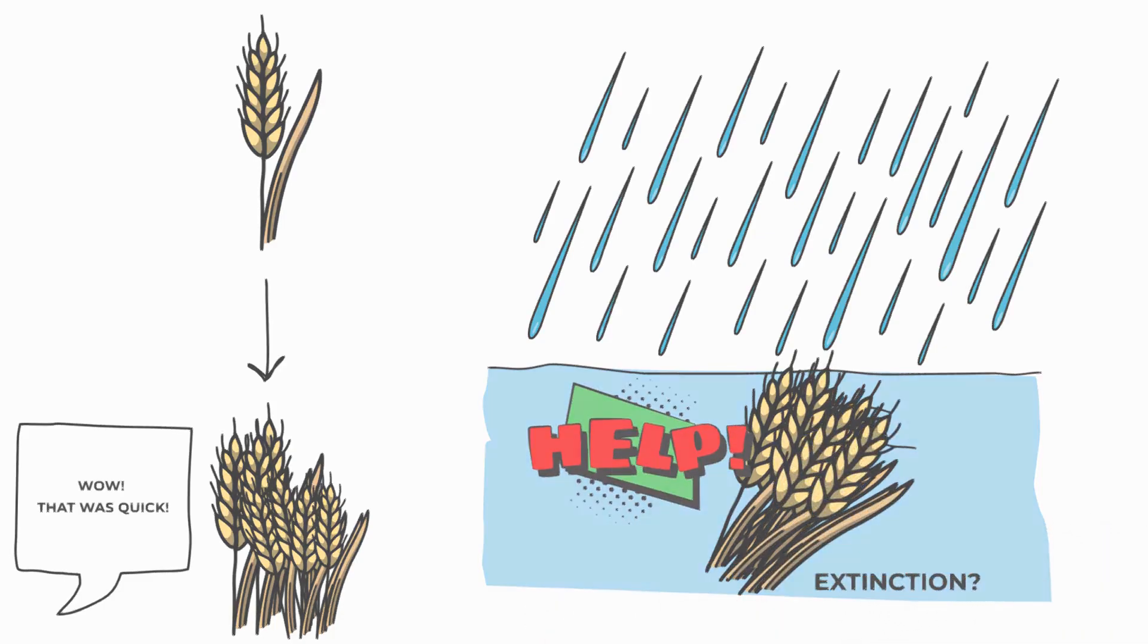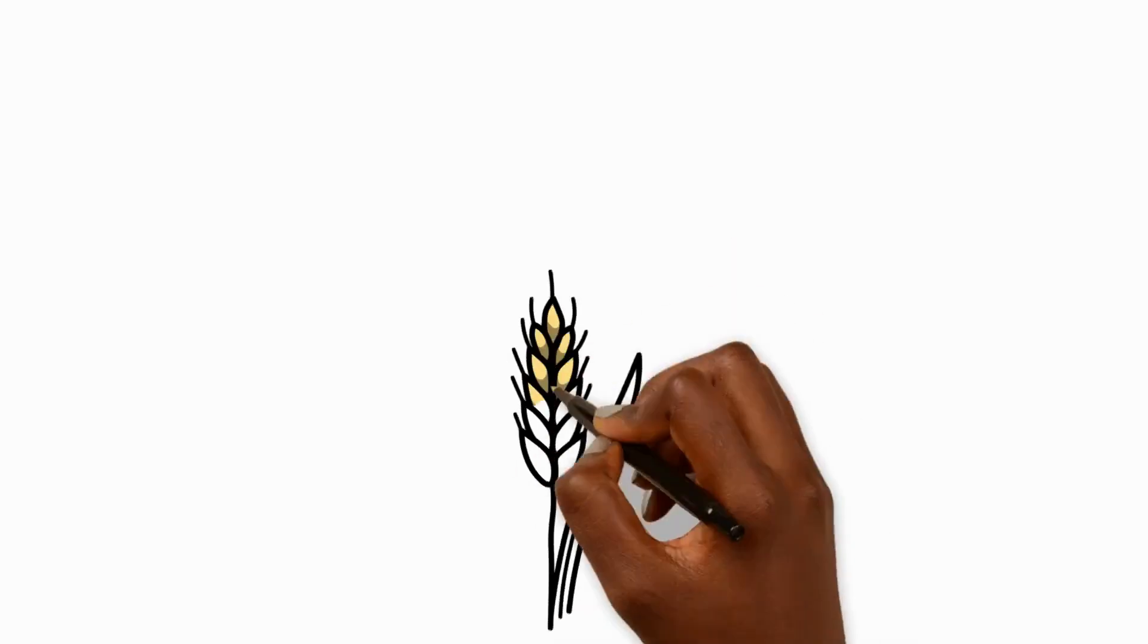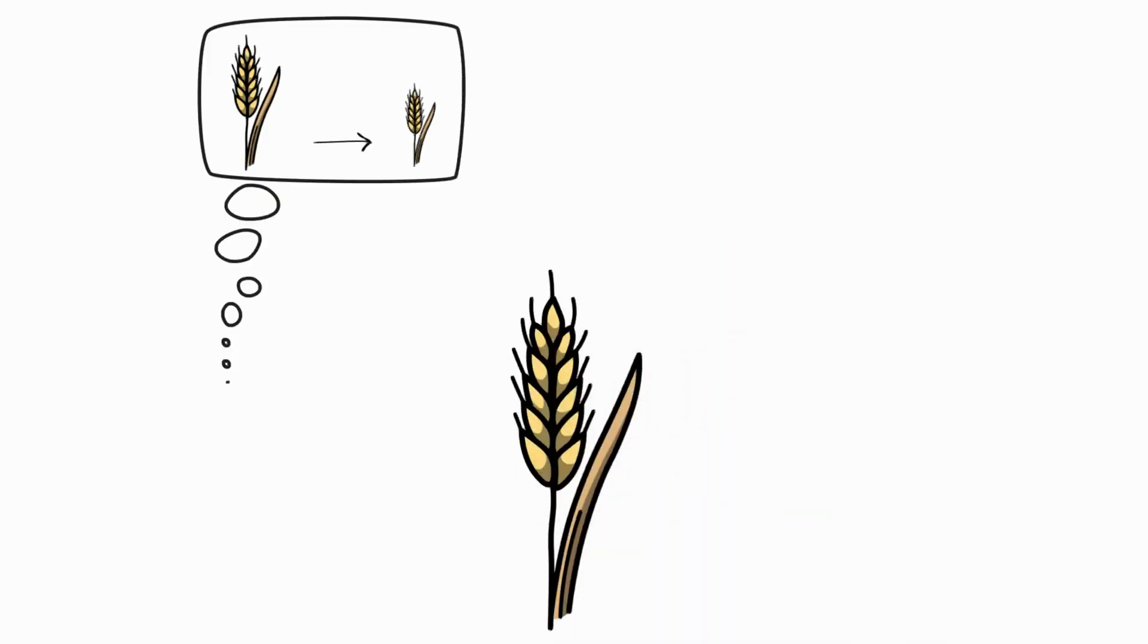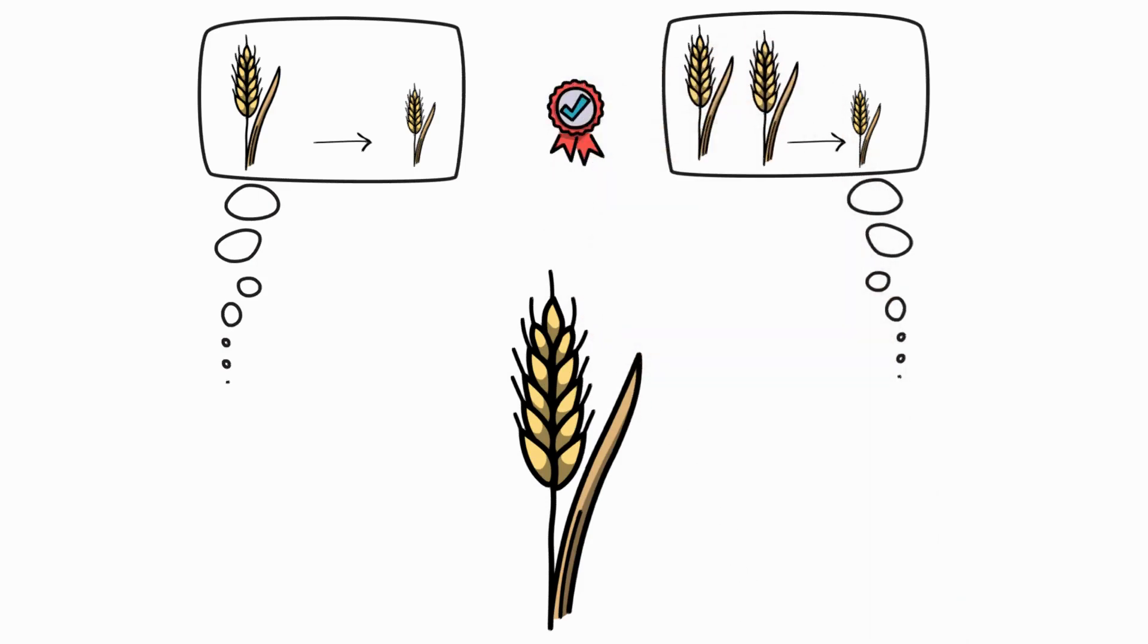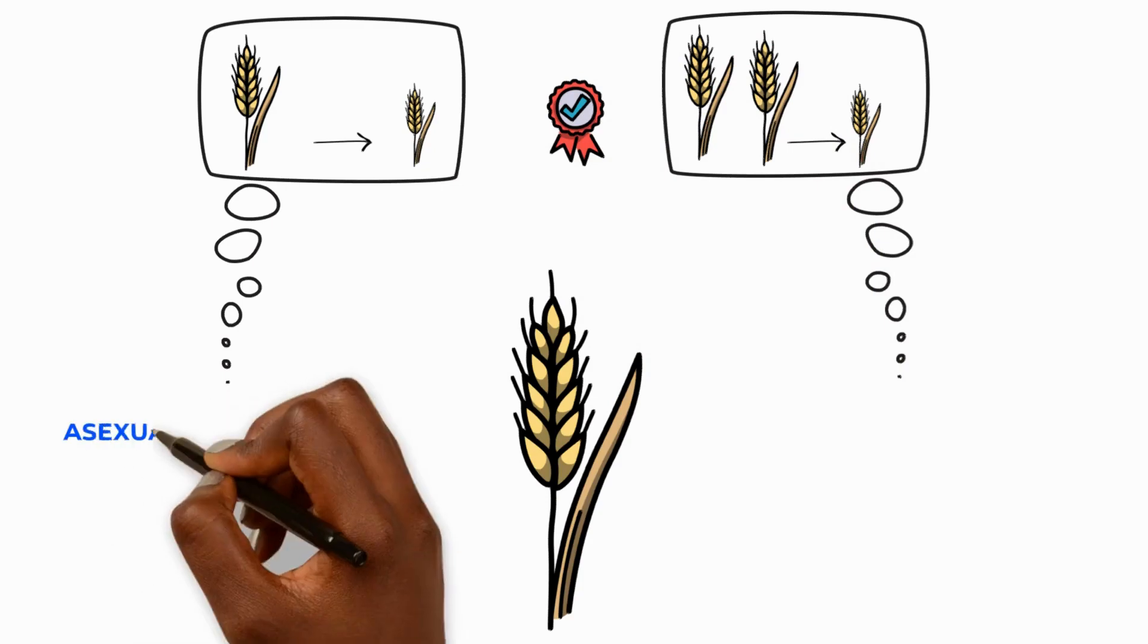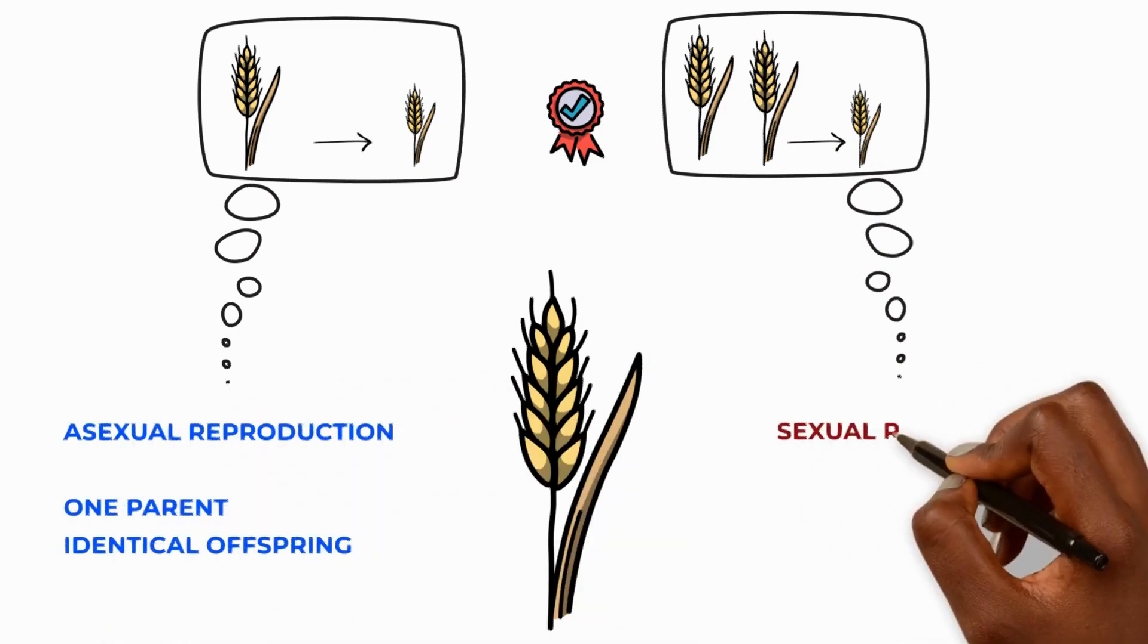Therefore, plants and animals that can choose to reproduce either asexually or sexually when they need to are more likely to successfully produce offspring. So, there you have it, the differences between asexual and sexual reproduction.